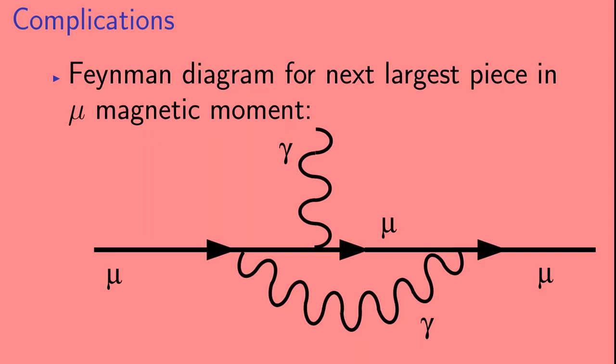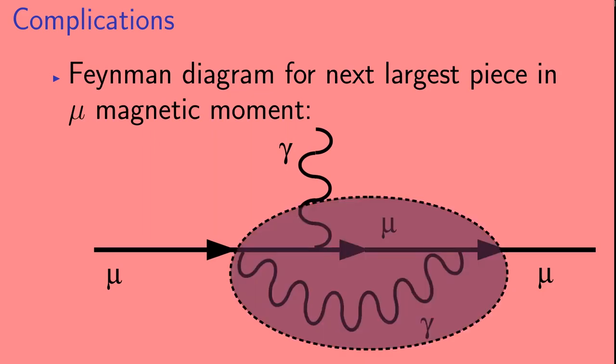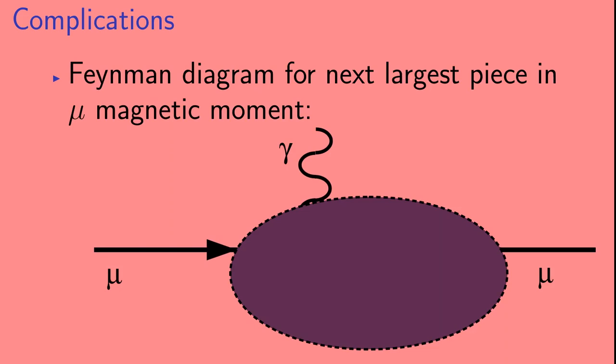Now, why might this diagram contribute to the muon magnetic moment? Let's look at what's going on in the middle of that diagram. If we try to measure G minus 2 of the muon, we're looking at how the muon interacts with the electromagnetic field. Experimentally, we take a muon and apply an electromagnetic field, and observe how the spin of the muon changes as a result. So, what we know about are the incoming muon, the applied electromagnetic field, and the outgoing muon. We're blind to the details of what happens in the middle of the process. So, experimentally, we can't distinguish between the case where an extra photon was radiated and reabsorbed by the muon, and the case where it wasn't. So, this diagram can also contribute to muon G minus 2.